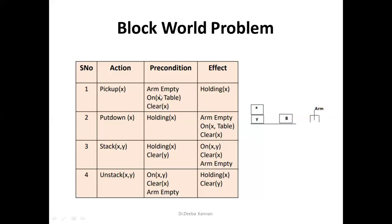You cannot pick up Y if X is on top of Y. The only possibility is when there is nothing on top of the block. So when I want to pick up X: the arm head must be free, X must be on the table, and the top of X must be clear. The after-effect is that the arm head will be holding X.